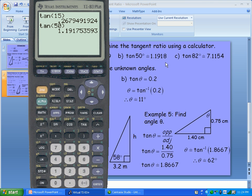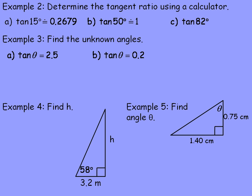The last one is tan of 82 degrees: typing in tan 82 gives 7.1154 rounded to 4 decimal places. Notice that as the angle increases from 15 to 50 to 82 degrees, the tangent ratio gets bigger — 0.2679, then a little over 1, then up to 7. That's because the larger the angle, the larger the slope, and so the higher the tangent ratio.